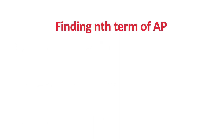Now let us study how to find the nth term of an AP. The nth term may be the 3rd, 4th, 15th, 20th, or even the 100th term of an Arithmetic Progression. It is not easy to find these terms by mere observation, so we use a formula for that purpose.